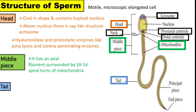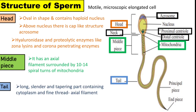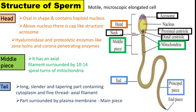Tail. It is a long, slender, tapering part containing cytoplasm and a fine thread axial filament. The axial filament arises from the distal centriole and travels throughout the length of the tail. It is partly surrounded by a plasma membrane, called the main piece or principal piece. The part without a plasma membrane is called the end piece.